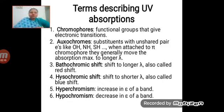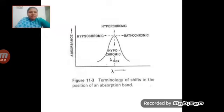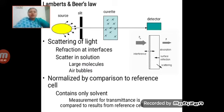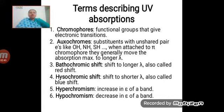Next is the auxochrome. What is an auxochrome? It is a substituent with an unshared pair of electrons — like OH, NH, SH — which, when attached to a chromophore, generally moves the absorption maxima to longer wavelength. An auxochrome is a saturated group with non-bonded electrons that does not absorb radiation above 200 nm, but when attached to a chromophore, causes the shift of absorption maxima towards longer wavelength.